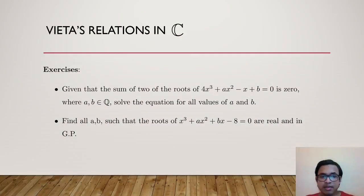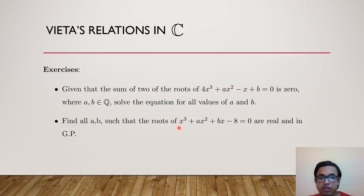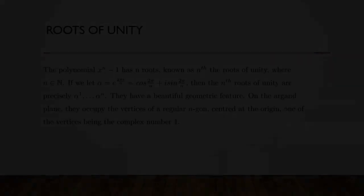Two exercises on Vieta's relations. First: given that the sum of two of the roots of 4x³+ax²−x+b = 0 is 0, where a and b are rational, solve the equation for all possible values of a and b. Second: find all a and b such that the roots of x³+ax²+bx−1 = 0 are real and in geometric progression, of the form α, αr, αr² where α and r are non-zero.